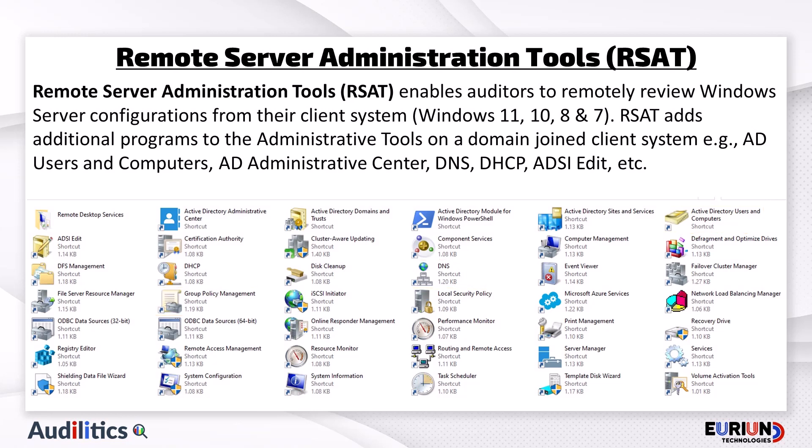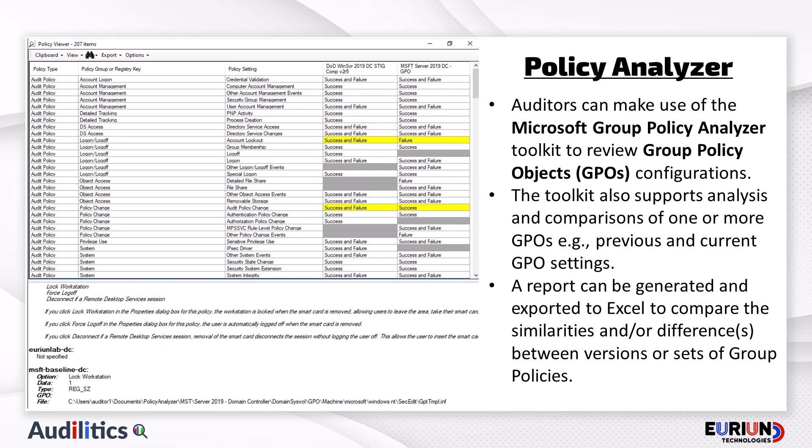Auditors can be granted read-only access to some of the server roles and features for an independent review. Auditors can also make use of the Microsoft Group Policy Analyzer Toolkit to review group policy object configurations. The toolkit supports analysis and comparisons of one or more GPOs — for example, comparing a previous and current GPO setting. A report can be generated and exported to Microsoft Excel for further comparisons of the differences and similarities between versions or sets of group policies.